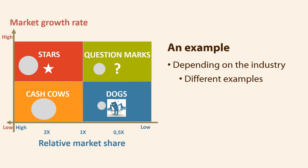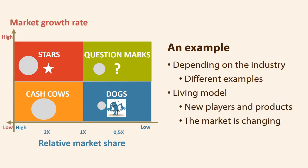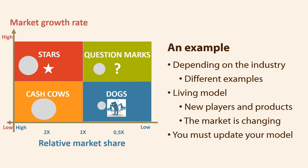Depending on the industry you are part of, the examples will be different from the four mentioned here. It is a living model, so the positions are continuously shifting. There are new players in the field with new products, and it also happens that the market changes radically and old products come back. You must continuously update your model to make optimal use of it.